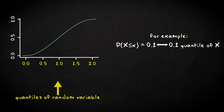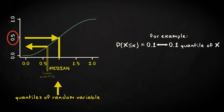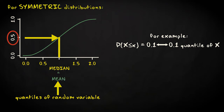You find, for example, at the cumulative probability of 0.5, the median value of the random variable, and for 0.25, the lower quartile. It is noteworthy that for symmetric probability distributions, the median coincides with the mean. So for symmetric distributions, the mean is also found at the cumulative probability of 0.5.